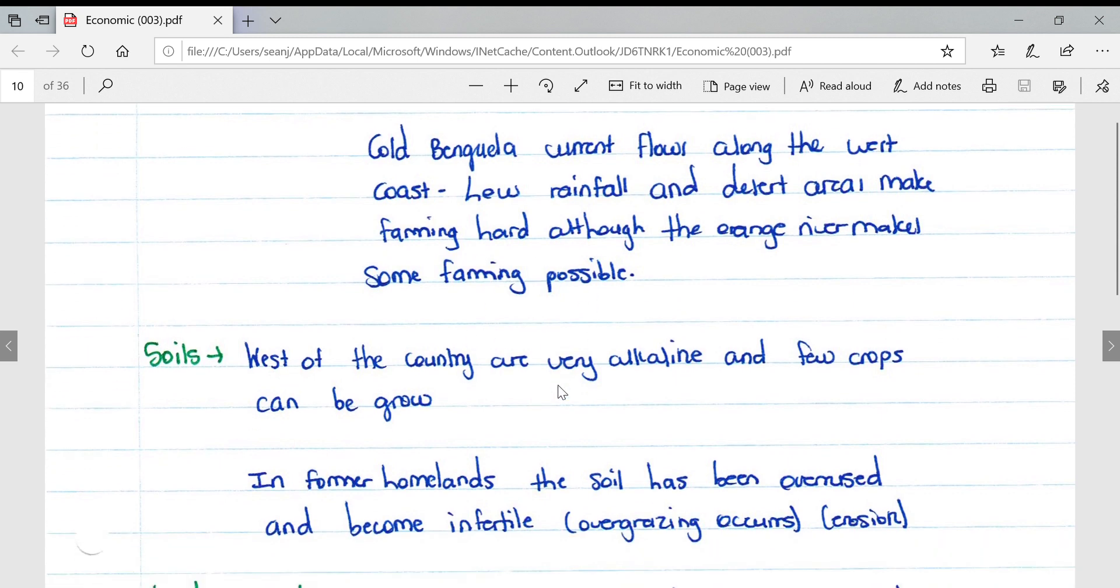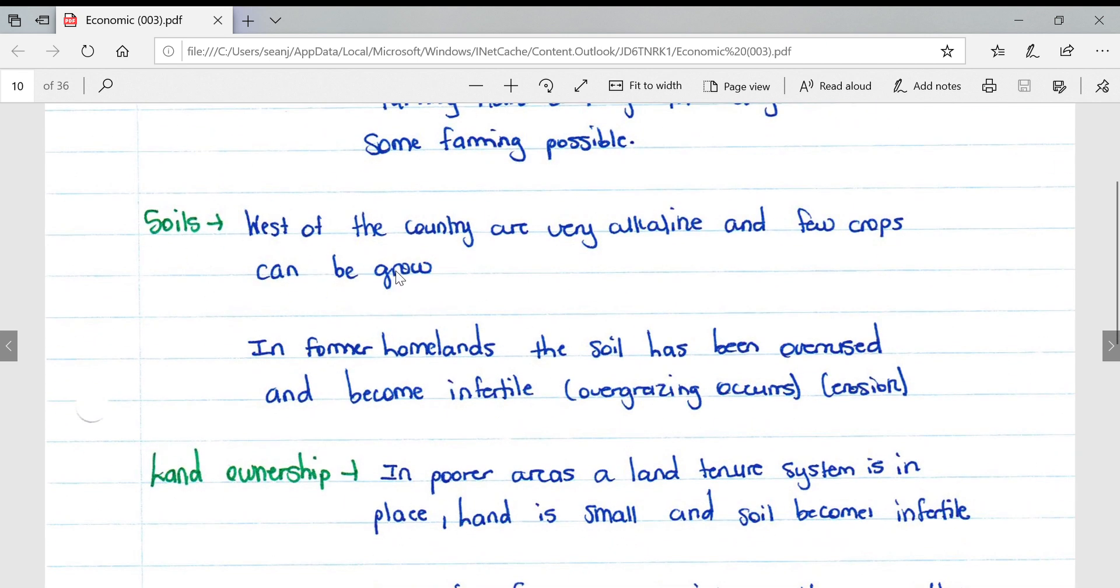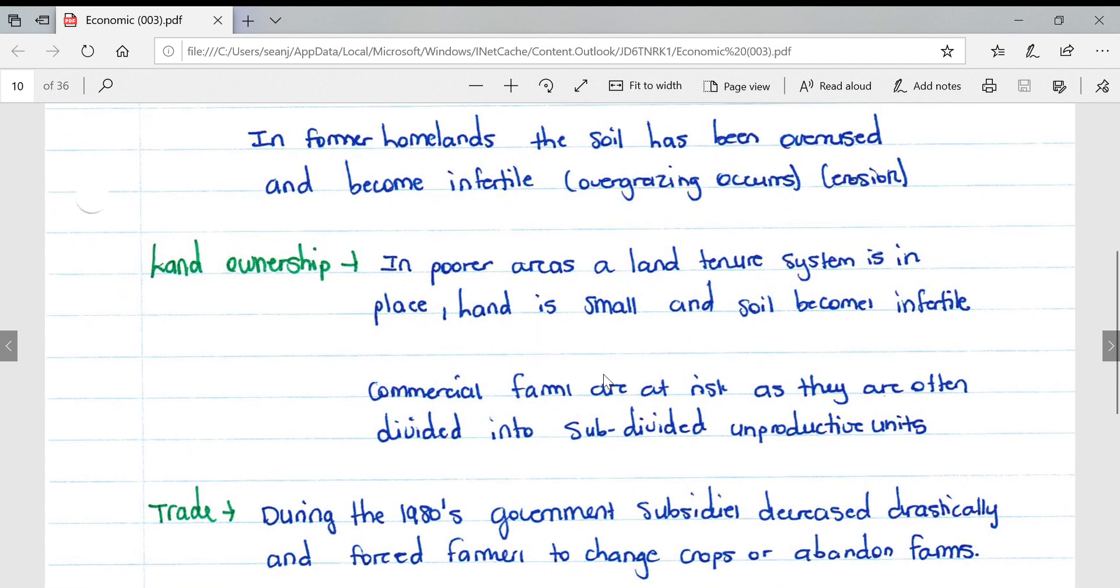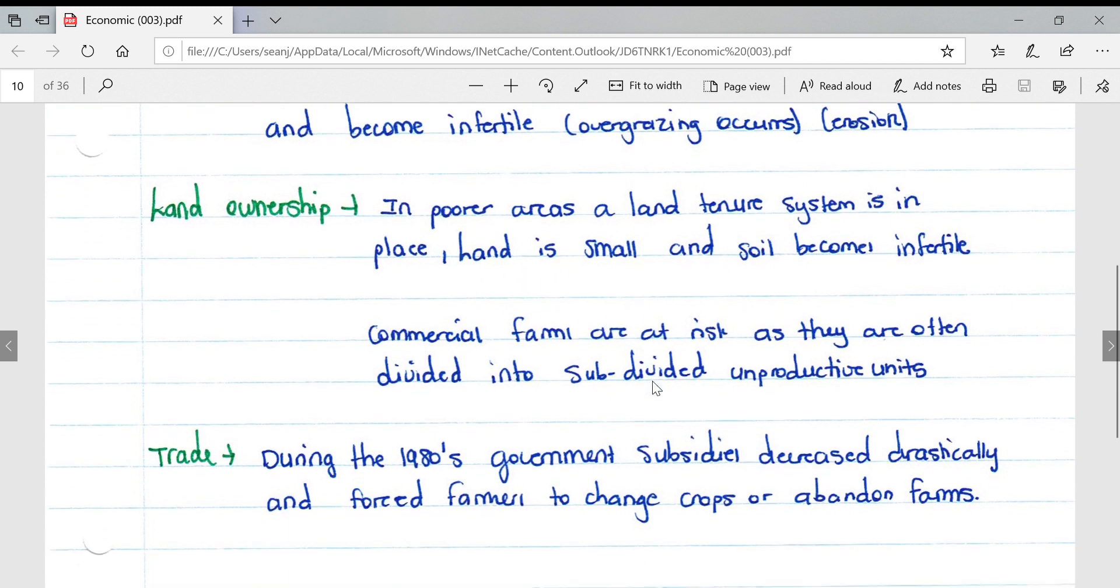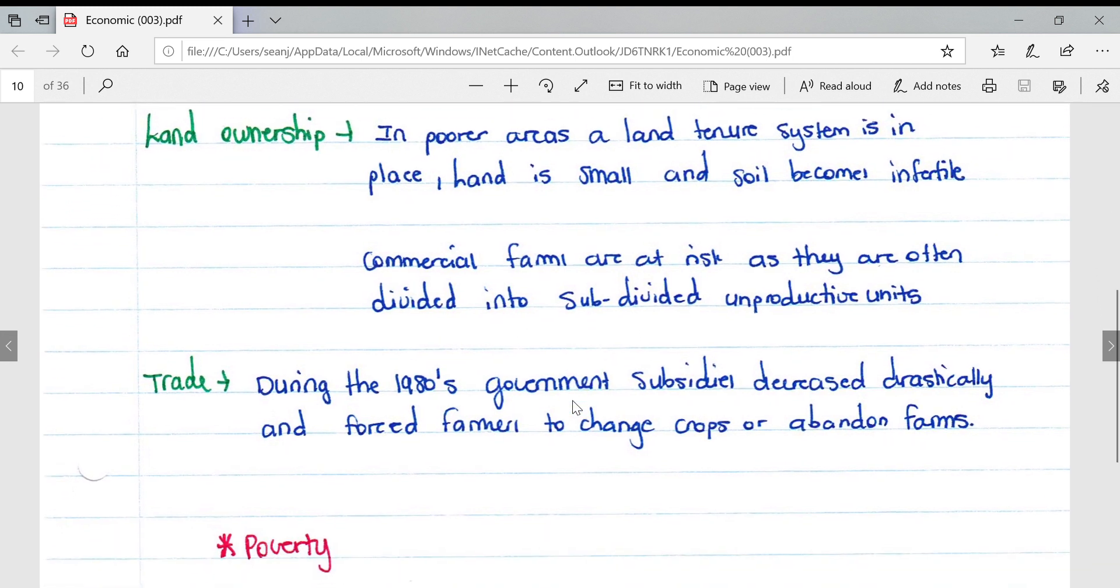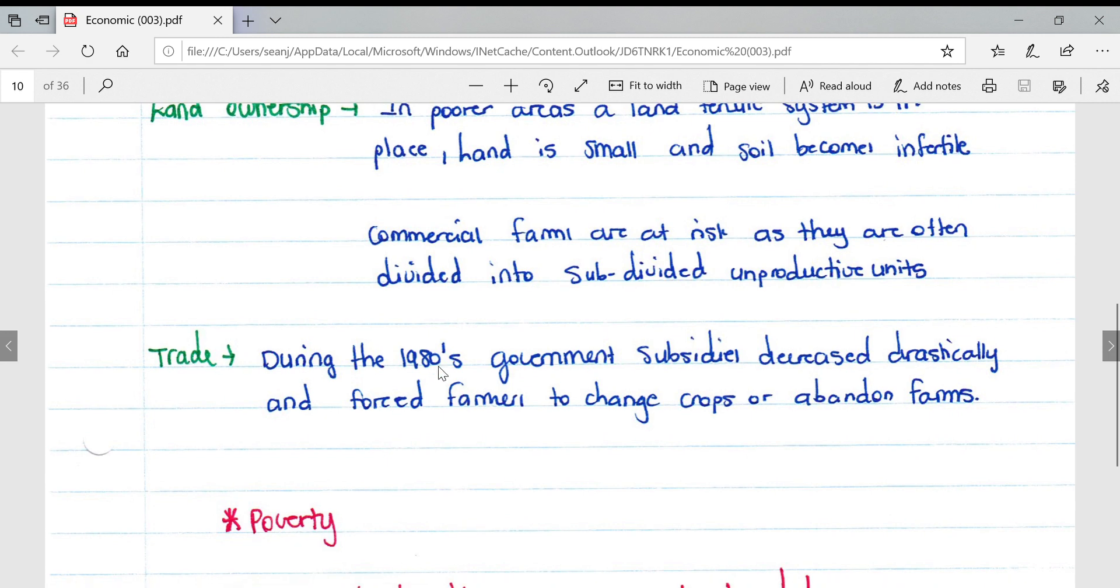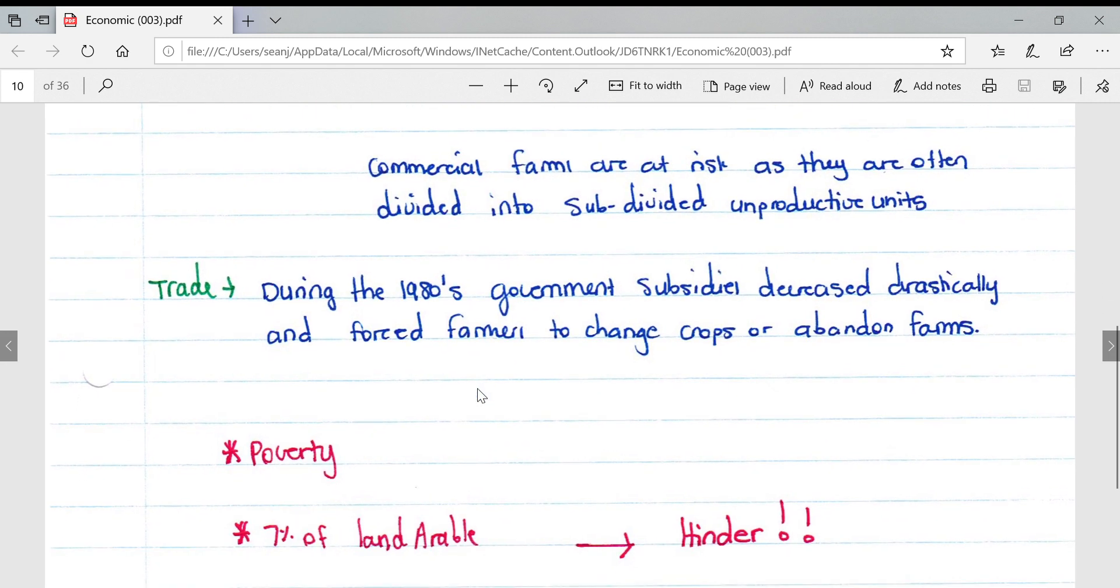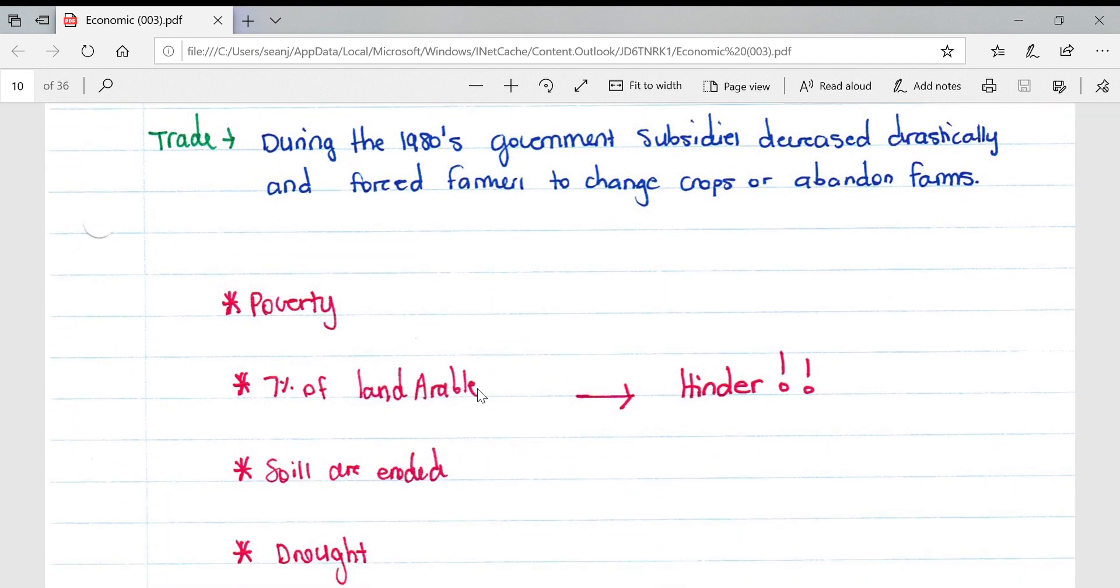For soils as a hindrance, the west of the country is very alkaline and few crops can be grown. In former homelands the soil has been overused and become infertile due to overgrazing and erosion. For land ownership, in poorer areas a land tenure system is in place and the land is small and soil becomes infertile. Commercial farms are at risk as they are often subdivided into unproductive units. For trade, during the 1980s government subsidies decreased drastically and forced farmers to change crops or abandon farms.